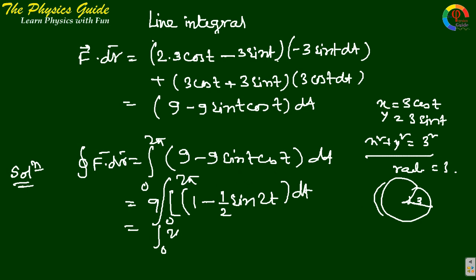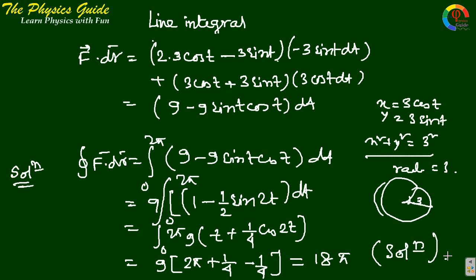Evaluating the limits: 9(2π) - (9/4)cos(4π) - [9(0) - (9/4)cos(0)] = 18π - 9/4 + 9/4 = 18π. So the solution is 18π. Thanks for watching.